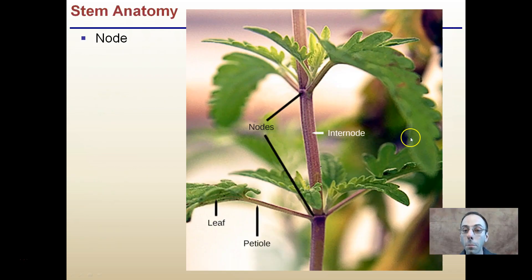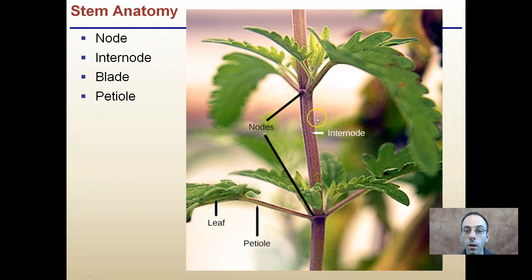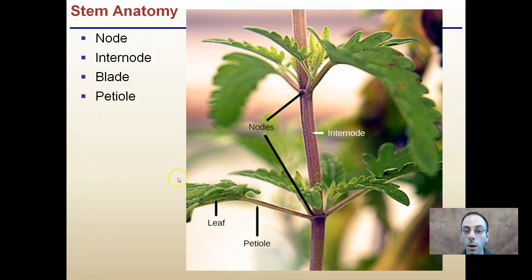A more macroscopic view of stem anatomy that you might be more familiar with: nodes are the areas where leaves originate. Internodes is simply the distance between two nodes. The blade, or the leaf, and the petiole, which is the supporting structure that supports the leaf or blade. Just be familiar with the stem anatomy to recognize it. We will be doing activities where you have to identify certain stems and leaves, and this video might prove helpful.